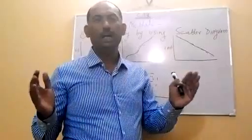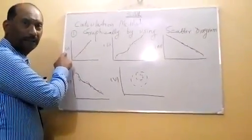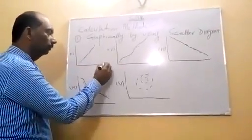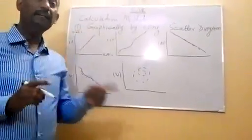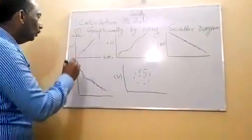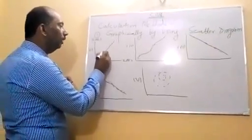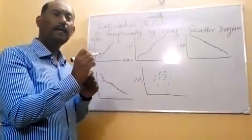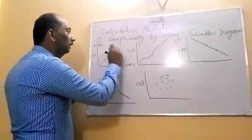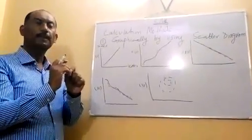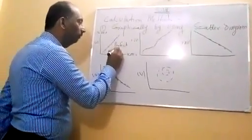If we represent variable X on the x-axis and variable Y on the y-axis, and we plot the data points as pairs, if the points are plotted and we draw a straight linear line through them, that straight line shows there is a perfect positive correlation.